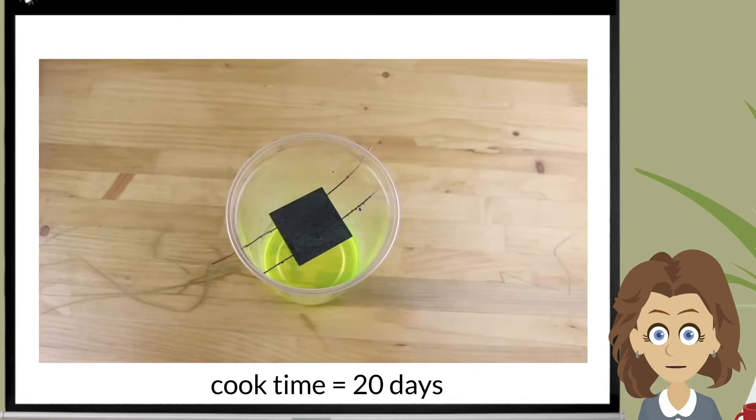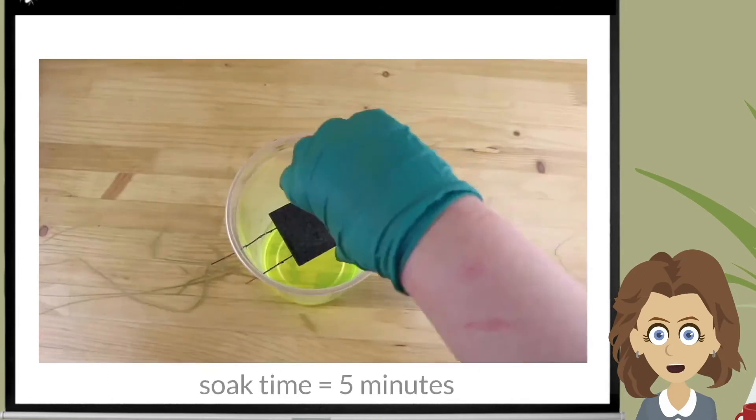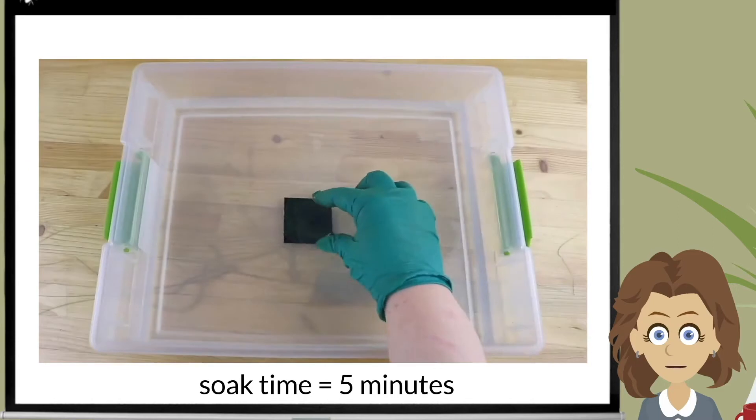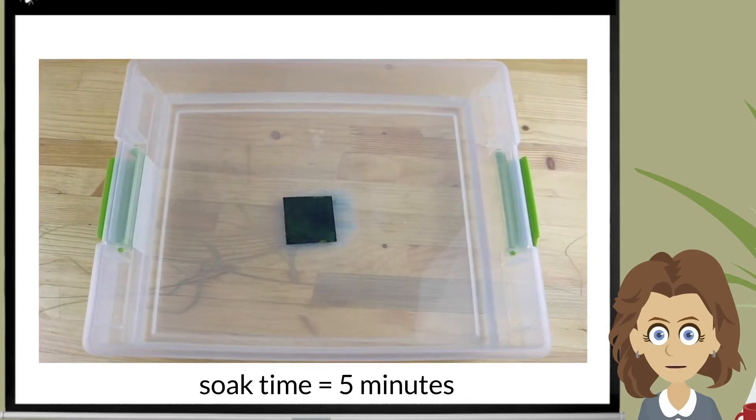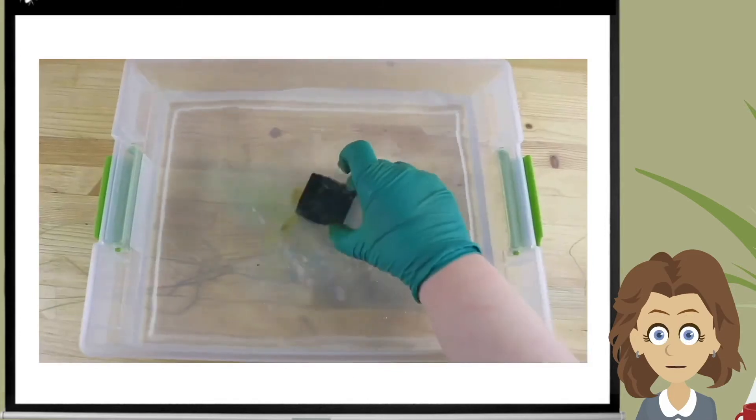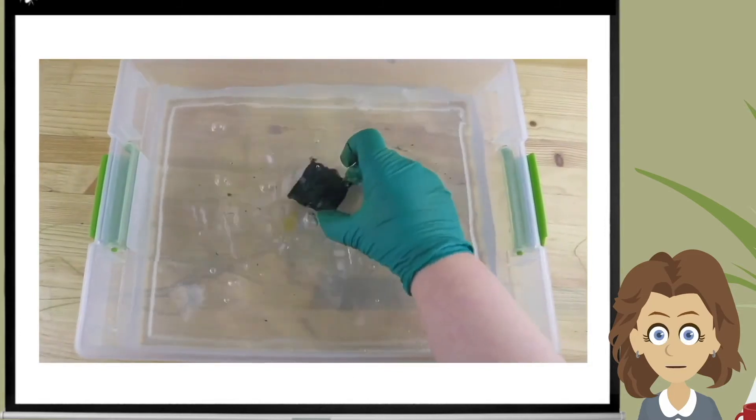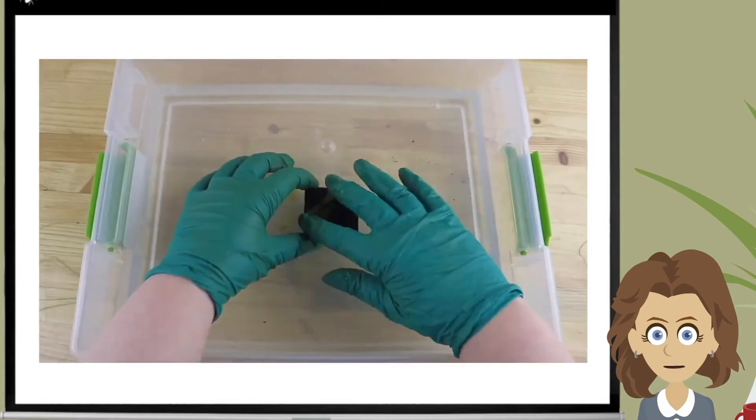I quickly cooked up a second sample with a cook time of 20 days. This time, I allowed no drying time, popped it directly into some nice warm water, and soaked for 5 minutes. Then gave a shake to see what would come off. Then gently brushed off some of the top layers.